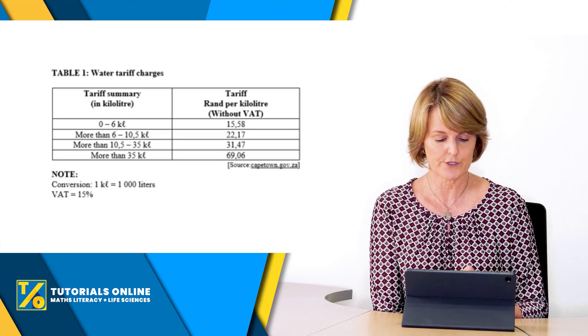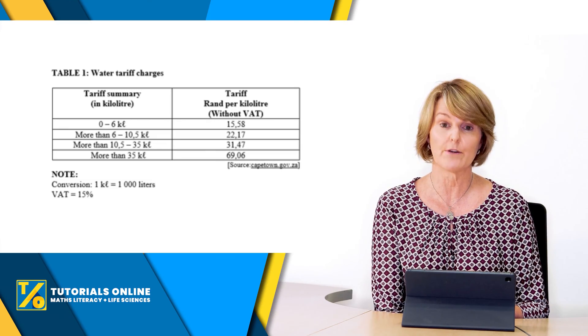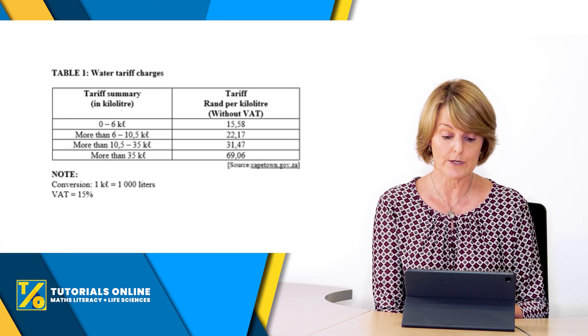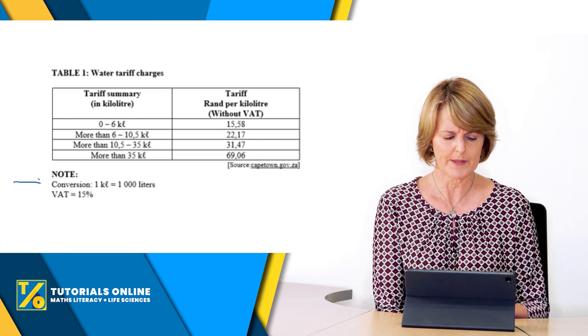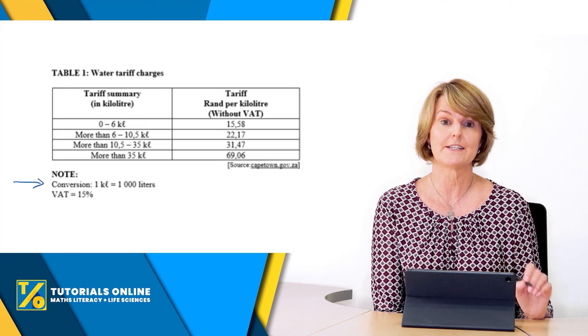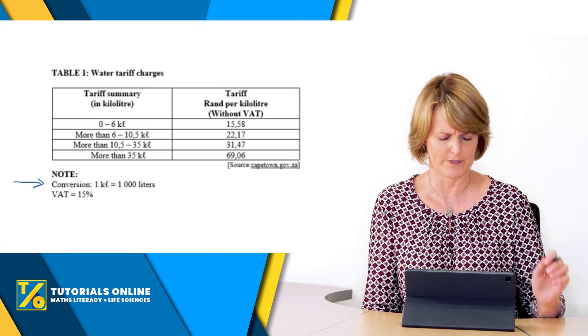At the top of your table it says water tariff charges, so this is water tariffs. If you look at the headings it says tariff summary in kilolitres. Now what's a kilolitre? If we look at the bottom over here you can see that one kilolitre is a thousand litres. That's a conversion and you should actually know that if you're in grade 12.